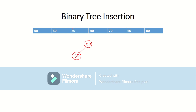Take the next number, 20. 20 is less than the root, so you have to travel down the left subtree. Now, 20 is again less than 30, so you have to insert 20 to the left of 30.